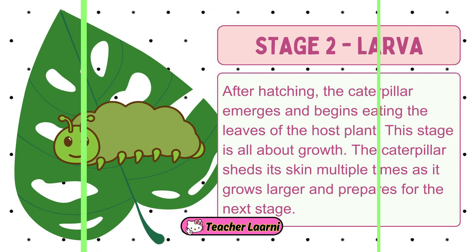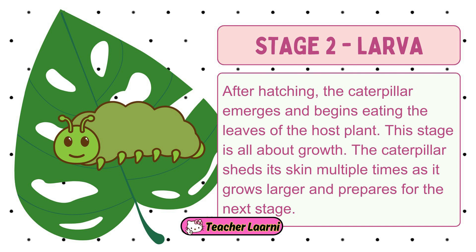Stage 2 – The Larva. After hatching, the caterpillar emerges and begins eating the leaves of the host plant. This stage is all about growth. The caterpillar sheds its skin multiple times as it grows larger and prepares for the next stage.